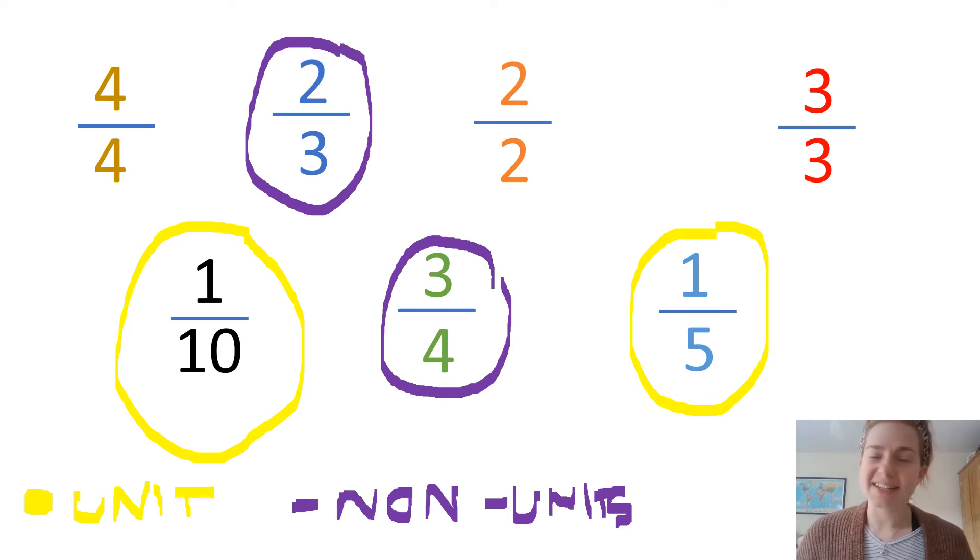You might be wondering why I didn't circle four-fourths, two-halves and three-thirds as non-unit fractions. Because, technically, they are, yes, they are non-unit fractions, as they all have numerators more than one. But, they're also something else. I wonder if you can think about what else they are. Something you might notice about them. So, if I'm looking carefully, I wonder if you can notice anything. Yes, the numerator and denominator are the same.